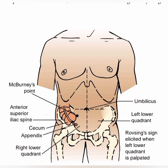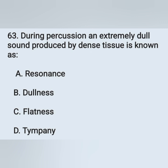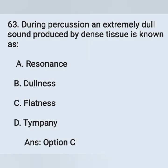Question 63: During percussion, an extremely dull sound produced by dense tissue is known as: Option A: Resonance, Option B: Dullness, Option C: Flatness, Option D: Tympani. The extremely dull sound produced by dense tissue during percussion is known as flatness — Option C is the correct answer.